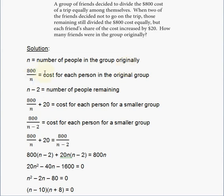800 divided by N represents the cost for each person in the original group. Before the two people left, you had N people, so 800 divided by N gives you the cost per person. For example, if there were 10 people, 800 divided by 10 would be $80 for each person.